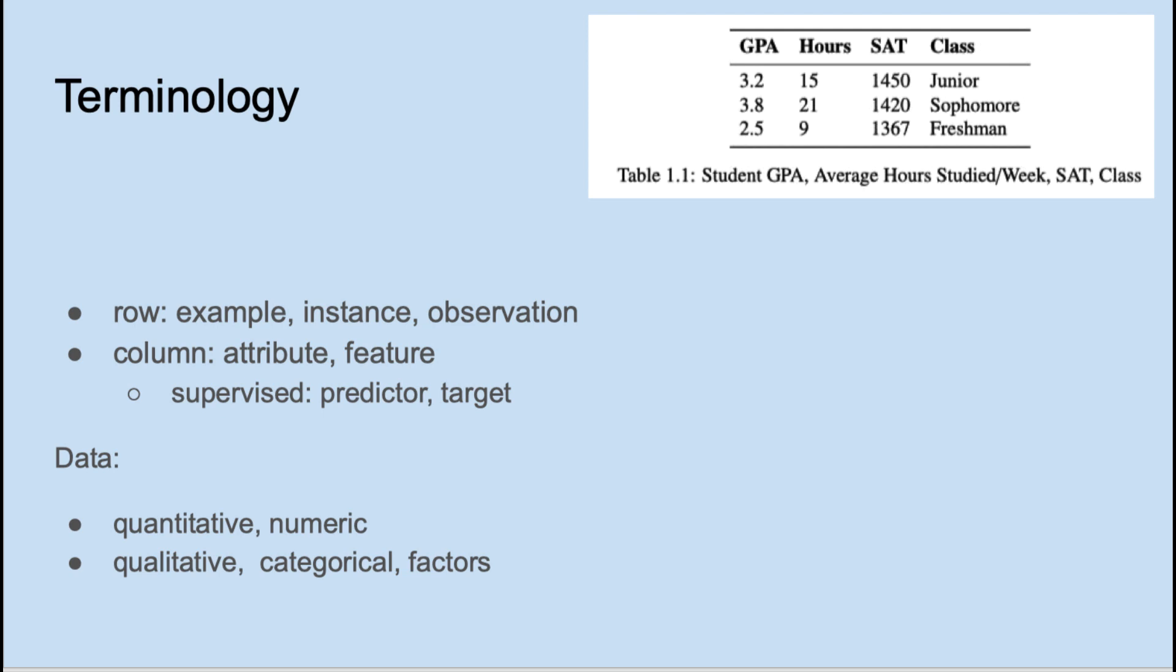Because machine learning grew out of both mathematics and computer science, there's a lot of duplicate terminology. Consider this tiny data table for illustration purposes. Each row represents one person. The row can be called an example, an instance, or an observation. Each column represents an attribute or feature of the person. If we're in supervised learning, we'll select one of these columns as the target and all others will be the predictors.